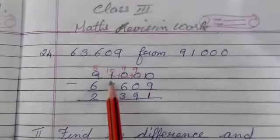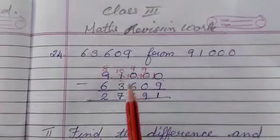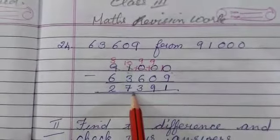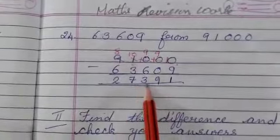Now all these find the difference. This is same. 91,000 minus 63,609. We got the answer after borrowing 27,321.